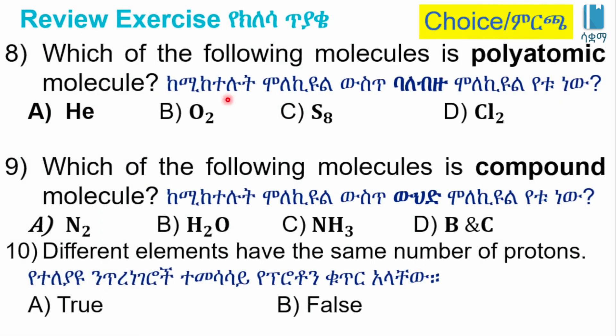Which one of the following molecules is a polyatomic molecule? A: H. B: O2. C: S8. D: Cl2. The answer is C, S8, which is sulfur with 8 atoms, making it a polyatomic molecule.